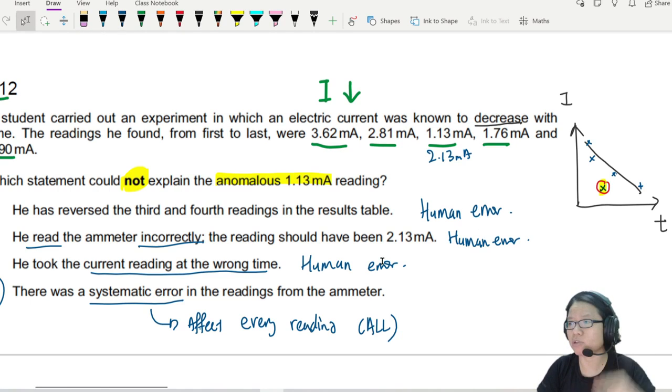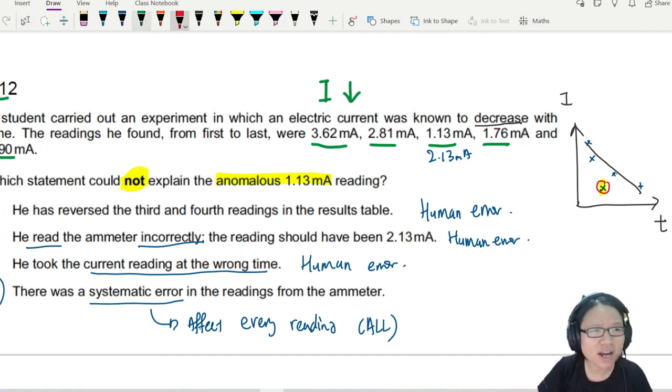So what happened? Human error, human error, your error. But if everyone's reading is also smaller than the real reading, meaning your entire graph is going to be shifted downwards because all the points will plot down.